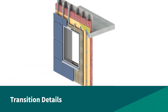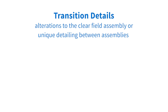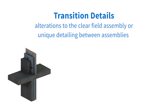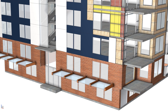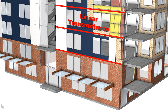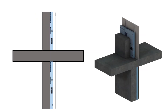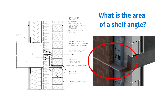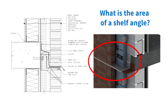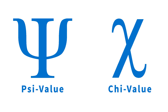Transition details often intersect or alter the clear field assemblies at specific locations, such as slab edges, parapets, and window transitions, which can create additional thermal bridging. Transition details can be separated into two types: details that can be defined as linear, such as slabs and parapets or other details that go across the building face, or point details that occur in single infrequent locations such as beam penetrations and pipes. While transition details may not take up a large area of the envelope, the impact they have on overall thermal performance can be significant. Most linear and point transition details are difficult to give an area-based U value to; therefore, they need a different way to calculate heat flow through these details, which is where psi and chi values come in.